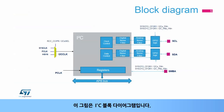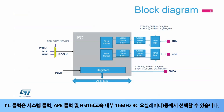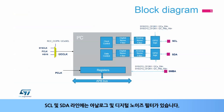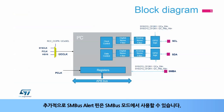Here is the I2C block diagram. The registers are accessed through the APB bus, and the peripheral is clocked with the I2C clock, which is independent from the APB clock. The I2C clock can be selected between the system clock, APB clock, and the high-speed internal 16 MHz RC oscillator. Analog and digital noise filters are present on the SCL and SDA lines. A 20 milliamp driving capability is enabled using the control bits in the system configuration registers. In addition, an SMBus alert pin is available in SMBus mode.